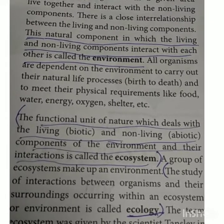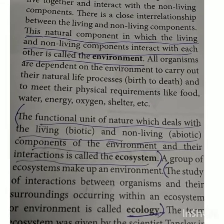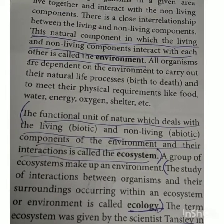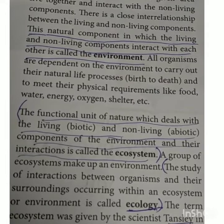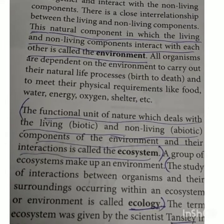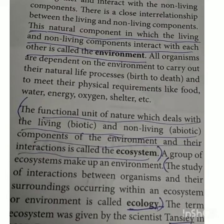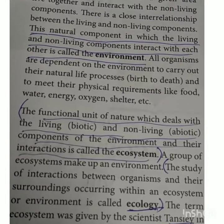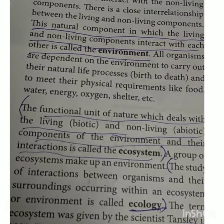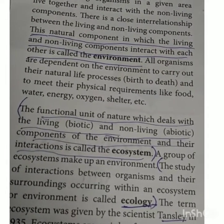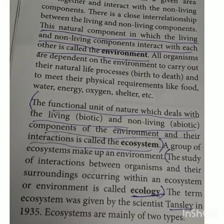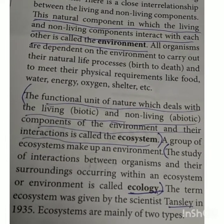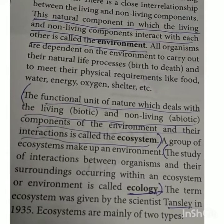The environment helps us to survive from birth to death; it provides different kinds of ingredients for our survival like water, energy, and oxygen. Now, what is ecosystem? Ecosystem is a functional unit of nature which deals with the living and non-living components of the environment. Living components include different types of animals and plants, and non-living components include air, temperature, and water. The interaction between these components is called the ecosystem. Any plant or animal that survives through its interdependence with surrounding living and non-living components is part of that particular organism's ecosystem.